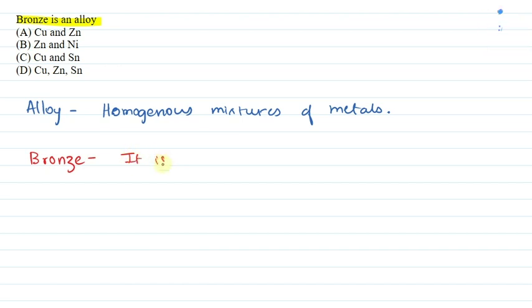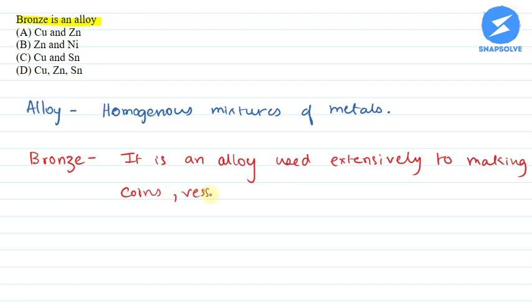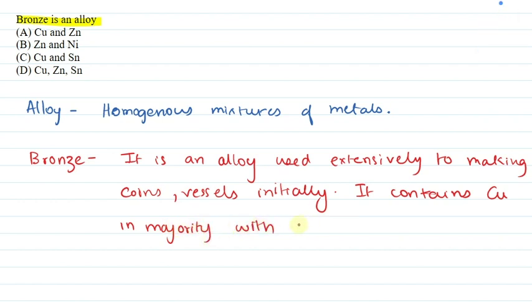So, it is an alloy used extensively for making coins, vessels initially. It contains copper in majority with tin.